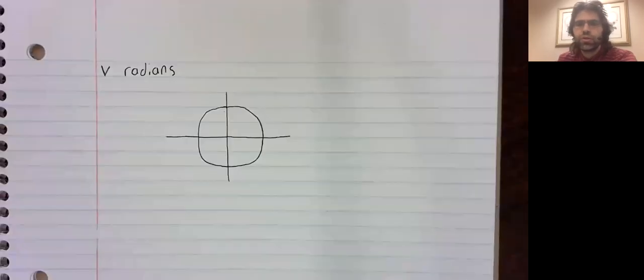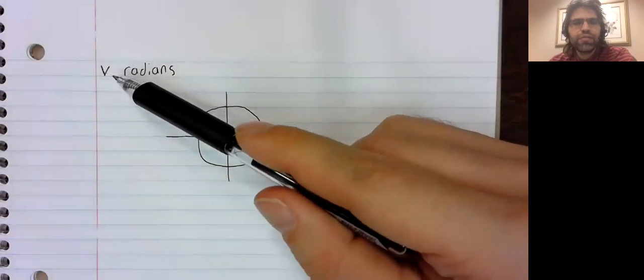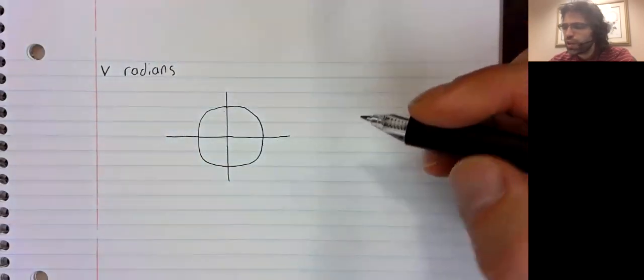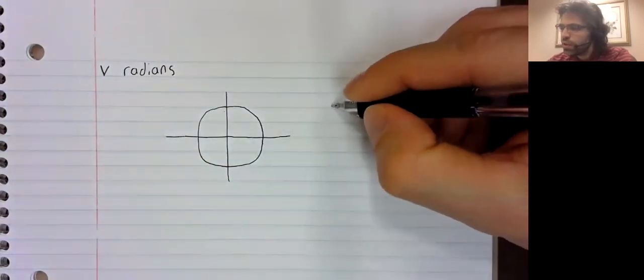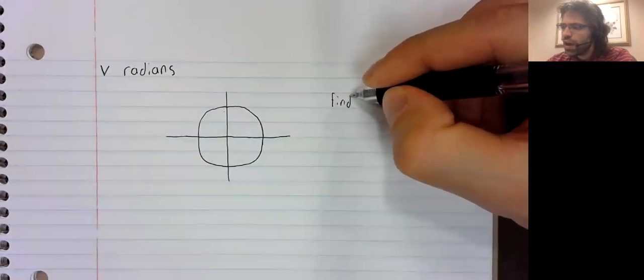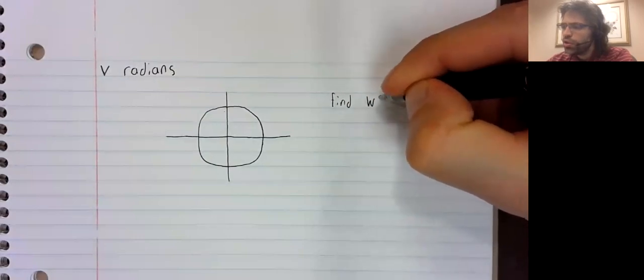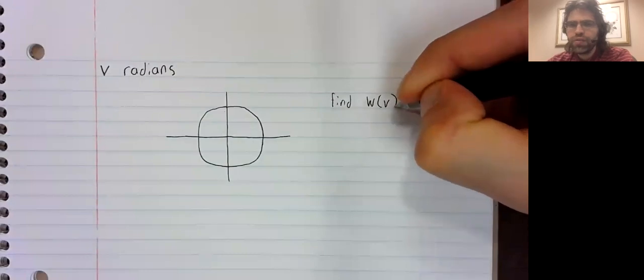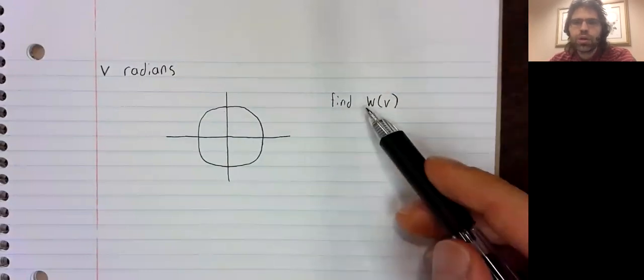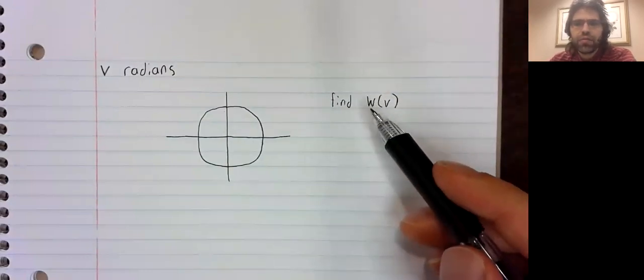Radians are measured in terms of the unit circle. To see what V radians represents, we find W of V, where W is the wrapping function.